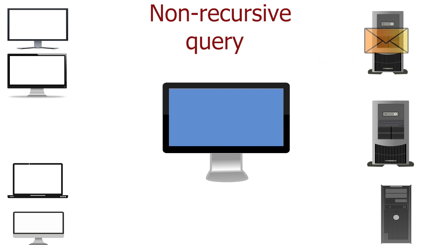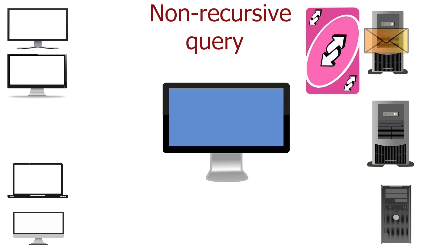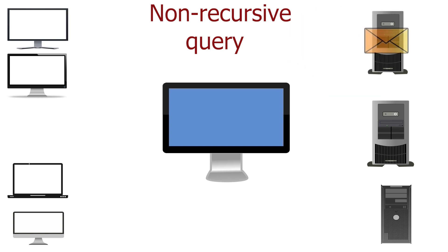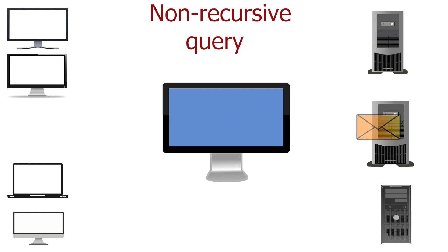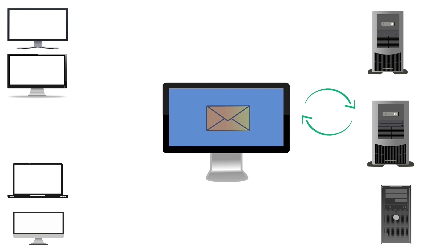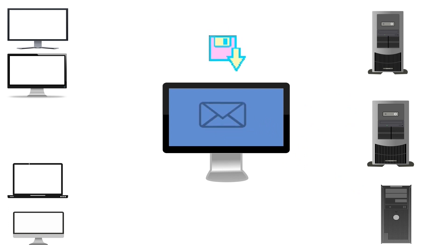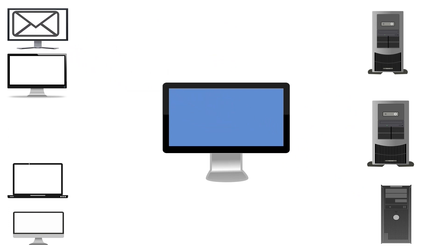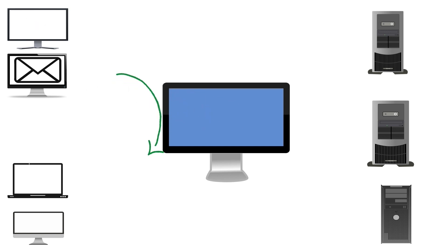If the request receiver device knows the IP address of the requested name, it translates the name. If it does not know the IP address, it replies with a referral — a list of DNS servers that the requester system can further use to resolve the name. The requester system uses another non-recursive query to resolve the name from the referred DNS server, repeating this process until it gets the answer. When it gets the answer, it saves it in the cache and replies to the original request generator system. If it receives another query for the same name, it replies from the cache.